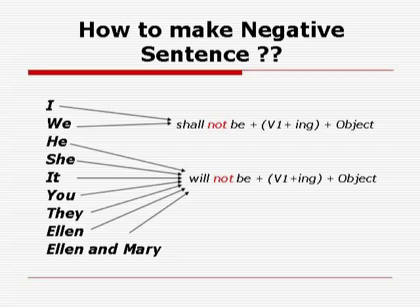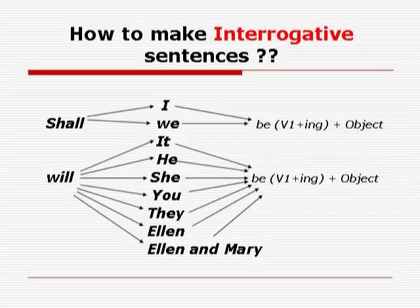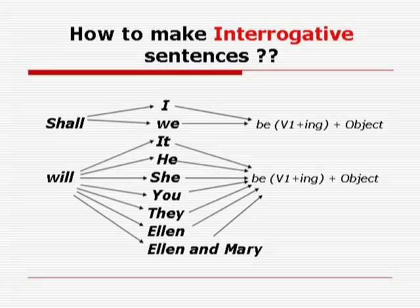How to make an interrogative sentence — bring the helping verb 'shall' or 'will' to the beginning of the sentence. The sentences become: Shall I be playing cricket? Shall we be playing cricket? Or using 'will': Will I be playing cricket? Will we be playing cricket? Will he be playing tennis? Will she be playing tennis? Will she be reading a book? Will you be playing cricket? Will they be playing football? Will Alan be playing tennis? Will Alan and Mary be playing tennis?